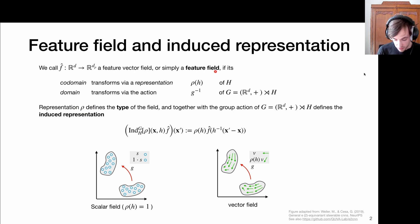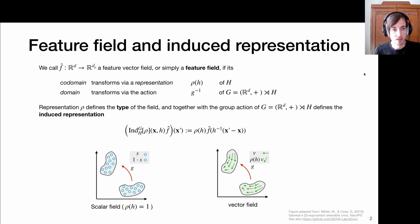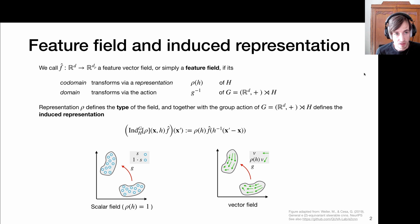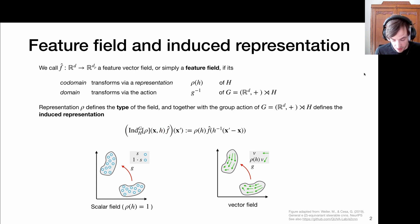In summary, we have feature fields, which are vector fields in which the vectors transform under a representation row of a subgroup H. This row is called the type. If we know the type and the overall group structure, then this induces a so-called induced representation. So row induces a representation on the entire vector field F-hat via transformation of the domain followed by transformation of the co-domain obtained by the representation row.